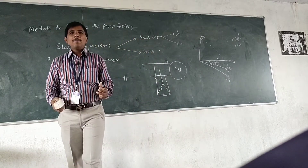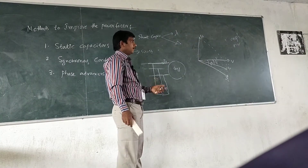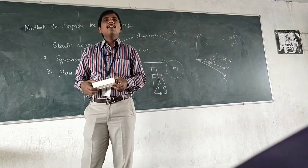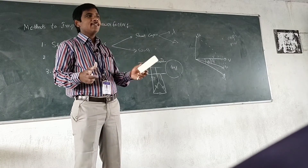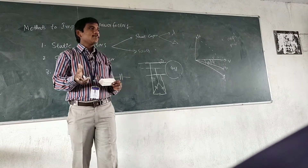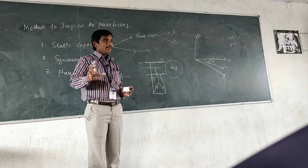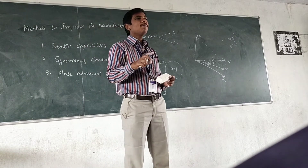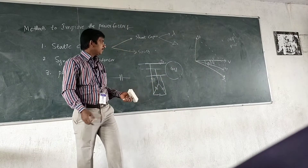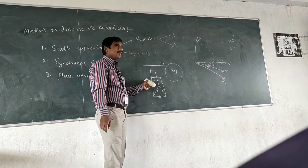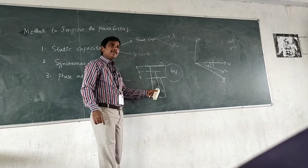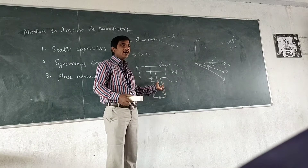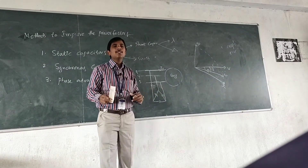We can connect the delta capacitors like this. In numerical problems, we calculate how much capacitance is required in delta and how much is required in star — the rating of the capacitor bank in star as well as delta. We will do some numerical problems also.